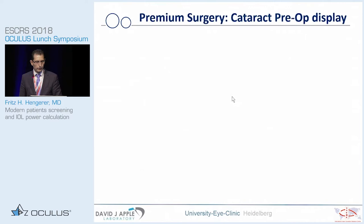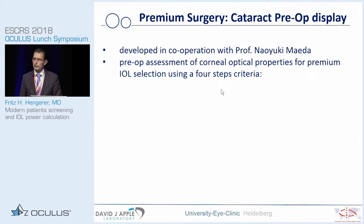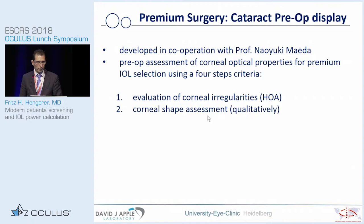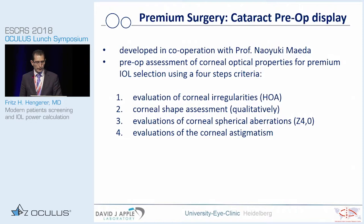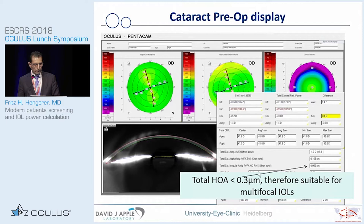Together with Professor Mehta, in order to screen patients with respect to their needs and expectations and which type of lenses we can use in cataract surgery, we have this preoperative assessment tool. It is very helpful to evaluate corneal irregularities — addressing higher order aberrations, corneal shape assessment qualitatively, and spherical aberrations — and whether an asphericity-correcting lens is suitable or not. This has been published a few years ago, and I will go through the slides with you in the next five minutes.